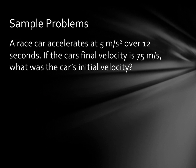So, let's try some more. This way you may be using a different variation of the equation. We have our race car accelerating at 5 meters per second squared over 12 seconds. If the car's final velocity is 75 meters per second, what is the car's initial velocity? So, our knowns, we know that a is 5 meters per second squared. We know that time is 12 seconds. We know that our final velocity is 75 meters per second.